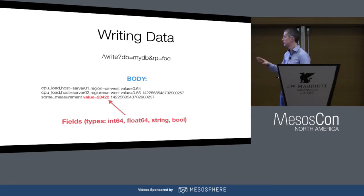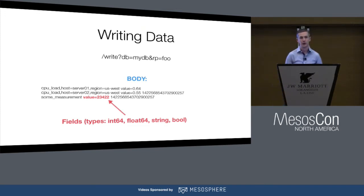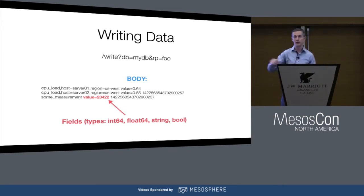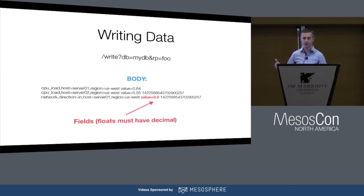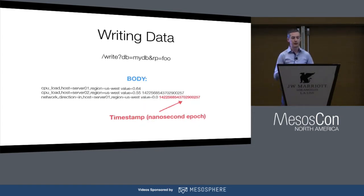You can technically have an unlimited number of fields, but realistically you'd probably want fewer than a thousand. Our collection agent will collect, for example, CPU statistics, and every unique measurement under CPU will be a different field. In the line protocol, floats must have a decimal, types must remain consistent over time, and the timestamp is a nanosecond epoch.